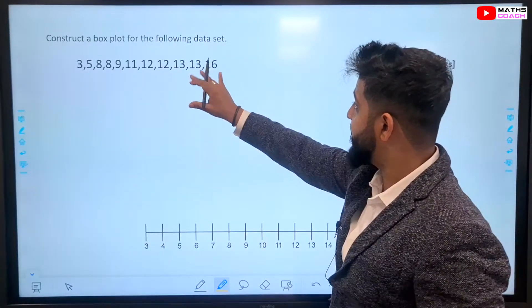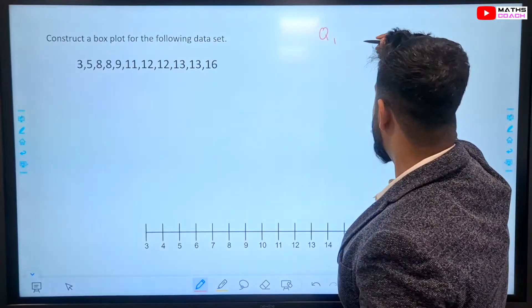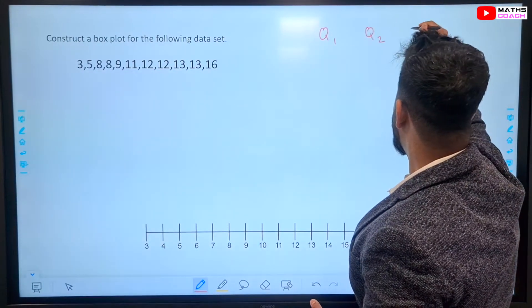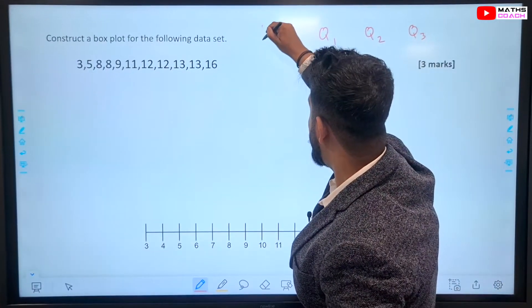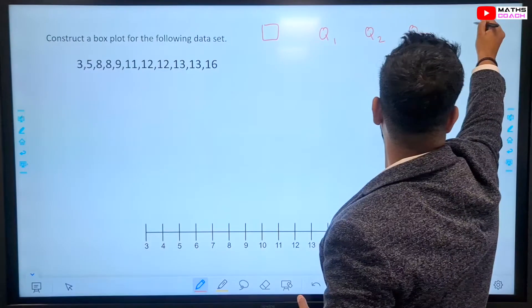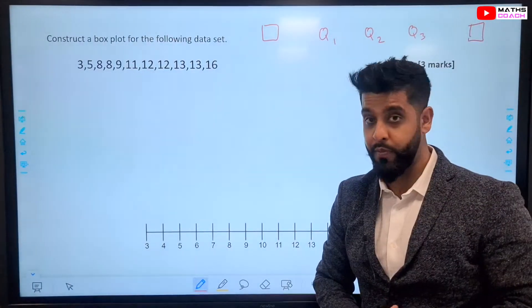From this data, we will be finding our Q1, which is our lower quartile. We'll find our Q2. We'll find our Q3, our median and our upper quartile. And we'll find our lowest value. And we'll find our highest value. And then, we'll complete our box plot.